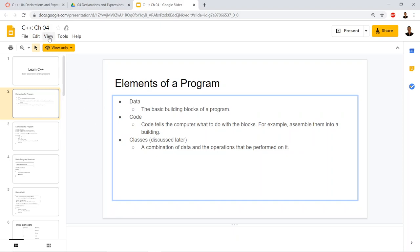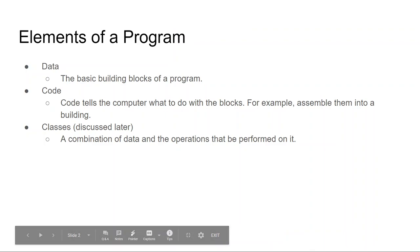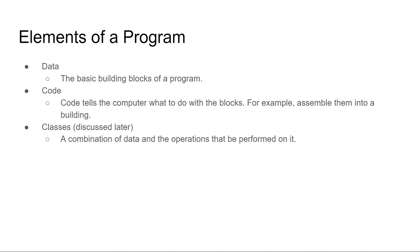Elements of a program. We have data, code, and classes. In C and previous to C++, they used ancient programming languages like COBOL — ones you wouldn't really get trained in now. There's still work in those languages, but it's mainly legacy code like ATM machines and bank software that doesn't get changed because it's so critical. Classes, which we'll discuss later, are a combination of data and operations to be performed. Data is the stuff we're storing, and code tells the computer what to do with it.